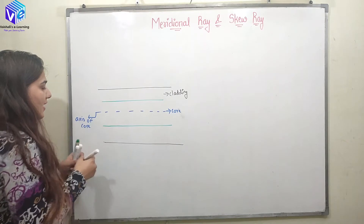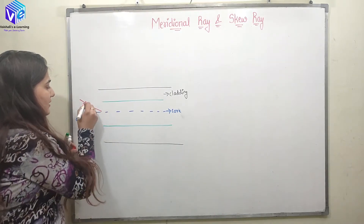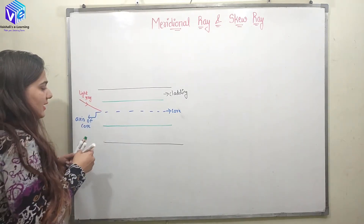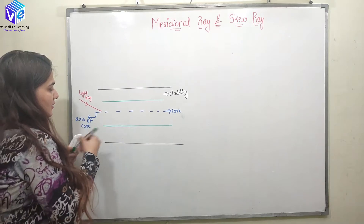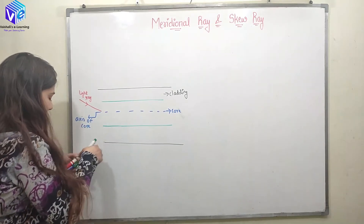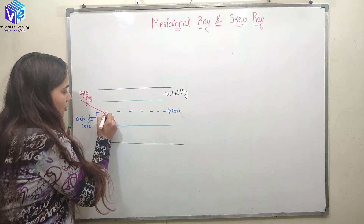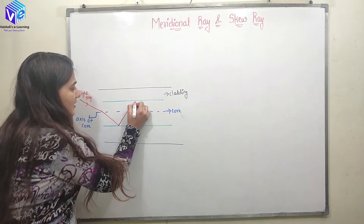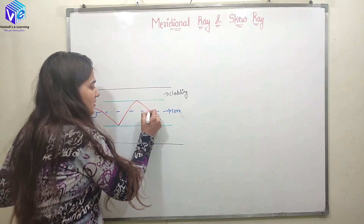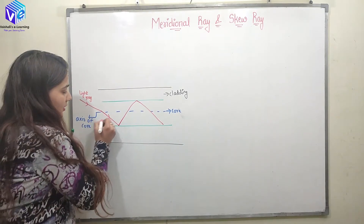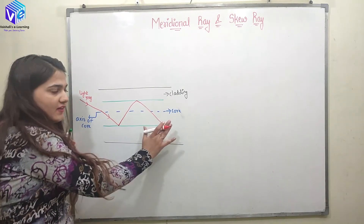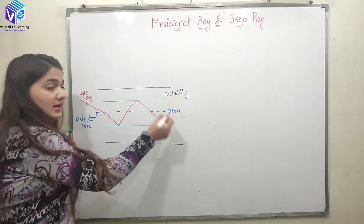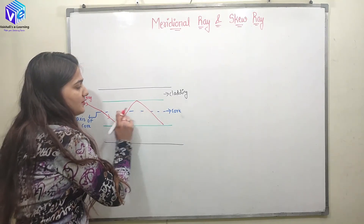Now, if I am sending any signal or light ray inside this optical fiber, what can happen? The light signal can pass through the axis of the core, then get totally internally reflected, and again pass through the axis of the core. So it is a straight-line path — the incident ray inside the optical fiber, inside the core, is traveling in a straight-line path and again and again it is passing through the core.